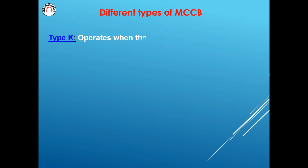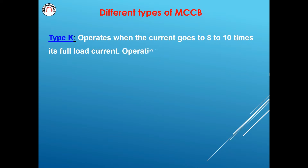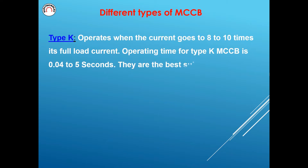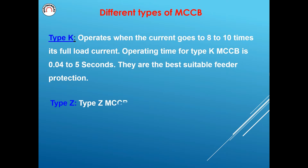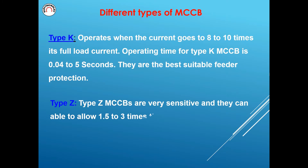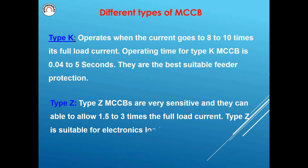Type K. Type K operates when the current goes to 8 to 10 times its full load current. The operating time for Type K MCCB is 0.04 to 5 seconds. They are best suitable for feeder protection. Type Z. Type Z MCCBs are very sensitive and can allow 1.5 to 3 times the full load current. Type Z is suitable for electronics loads where high-speed tripping is required.